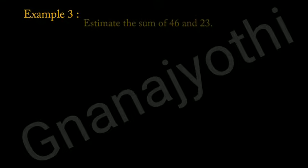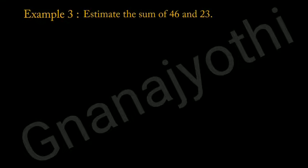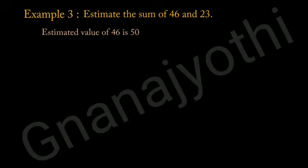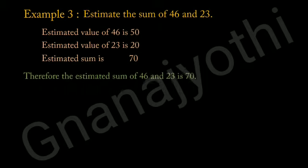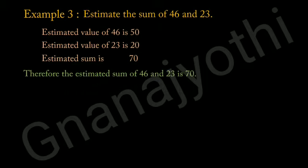Now look at example 3: Estimate the sum of 46 and 23. The estimated value of 46 is 50, and the estimated value of 23 is 20. Therefore, the estimated sum is 70 — that is, 50 plus 20 is 70. Therefore, the estimated sum of 46 and 23 is 70.